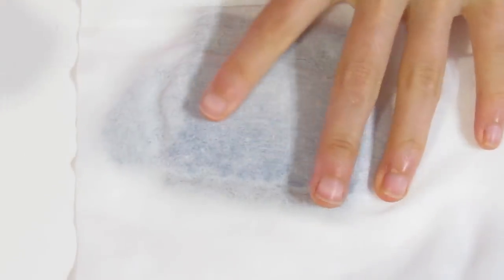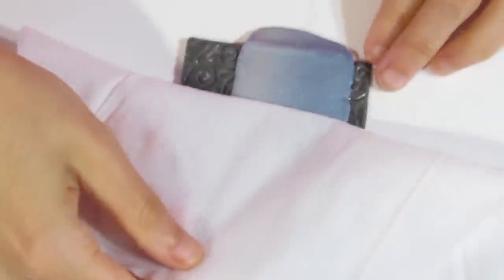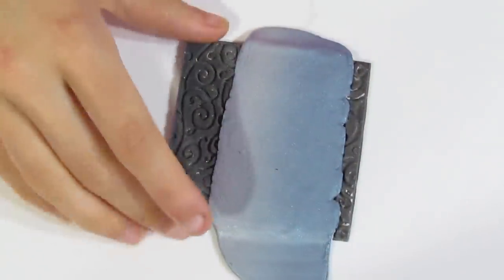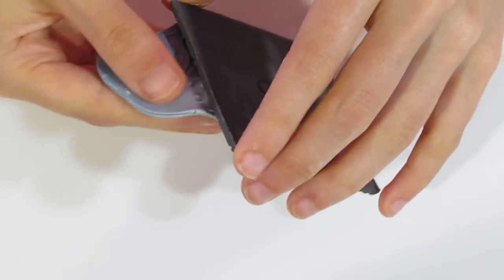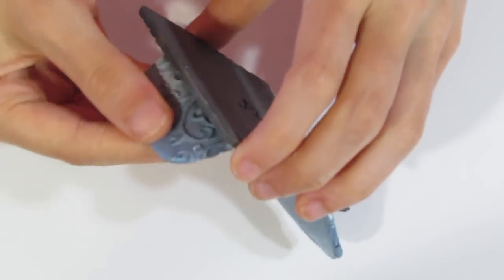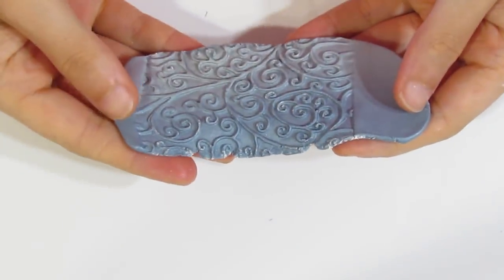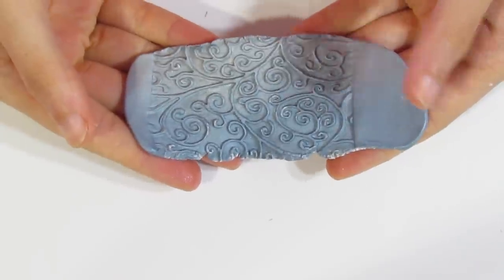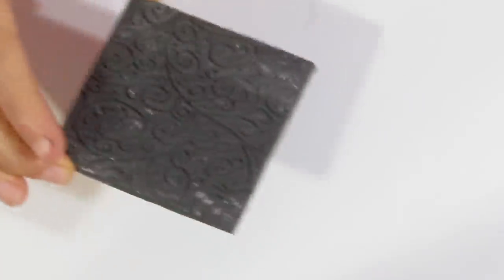This also gives the back a nice texture. Using the wet wipe, give it a quick roll with a roller to even it out and get rid of any fingerprint grooves. You can see it has a nice texture on the back. This should lift up pretty easily—you do need to be a little gentle with it. Don't yank it up, just gently peel it up.